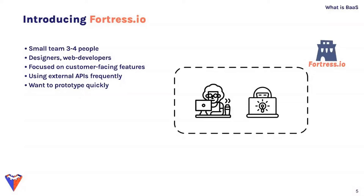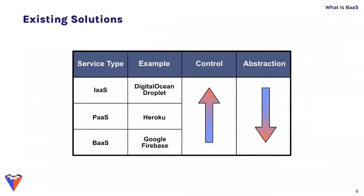In the past, they might have developed a backend from scratch and purchased their own hardware — giving complete control but prohibitively expensive and time-consuming. Instead, Fortress IO can use cloud hosting services. An infrastructure as a service product like a DigitalOcean droplet hosts server infrastructure in the cloud but still requires configuring the OS and application code. A platform as a service provider like Heroku handles hardware and the operating system, letting engineers focus on backend application code.